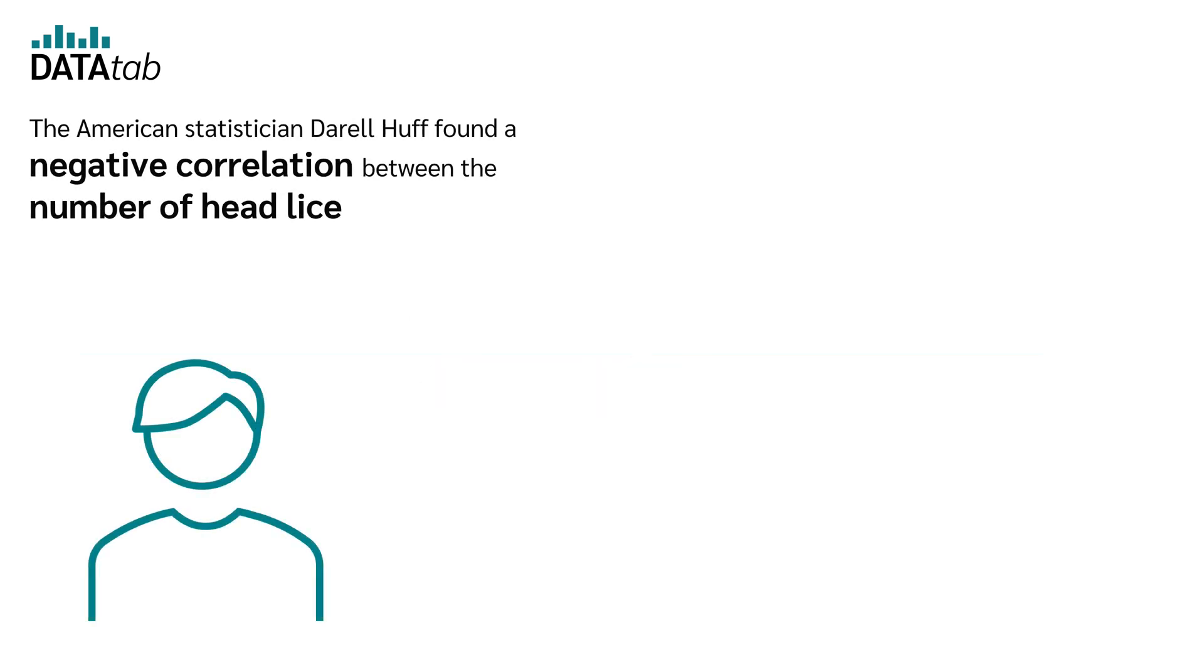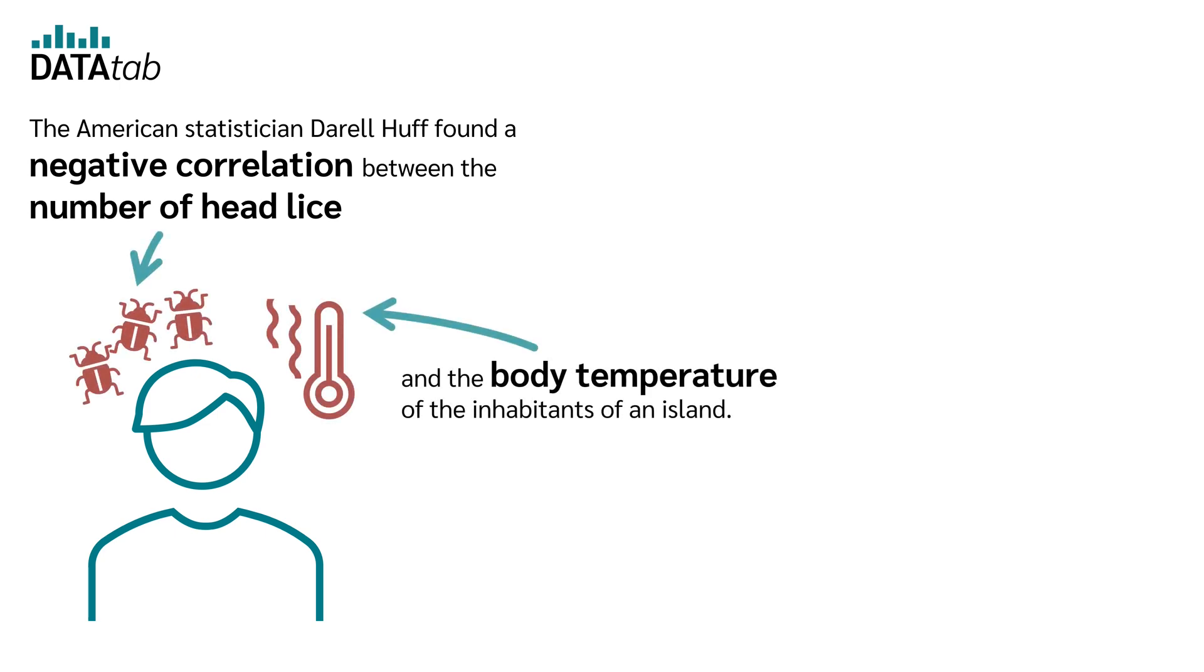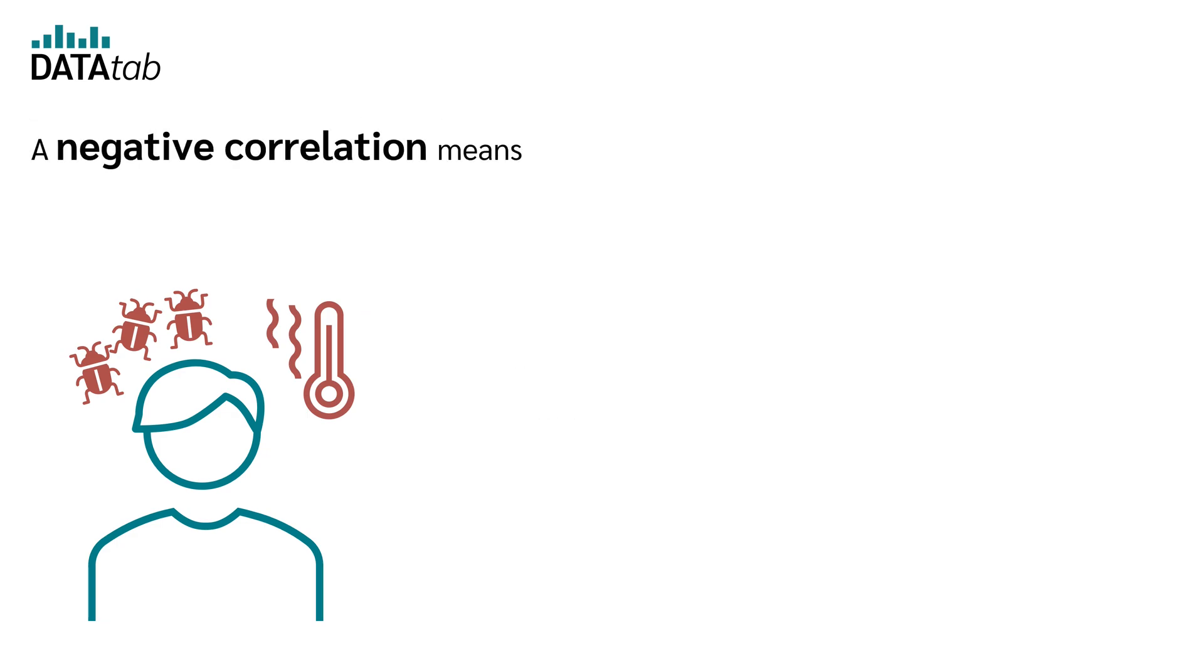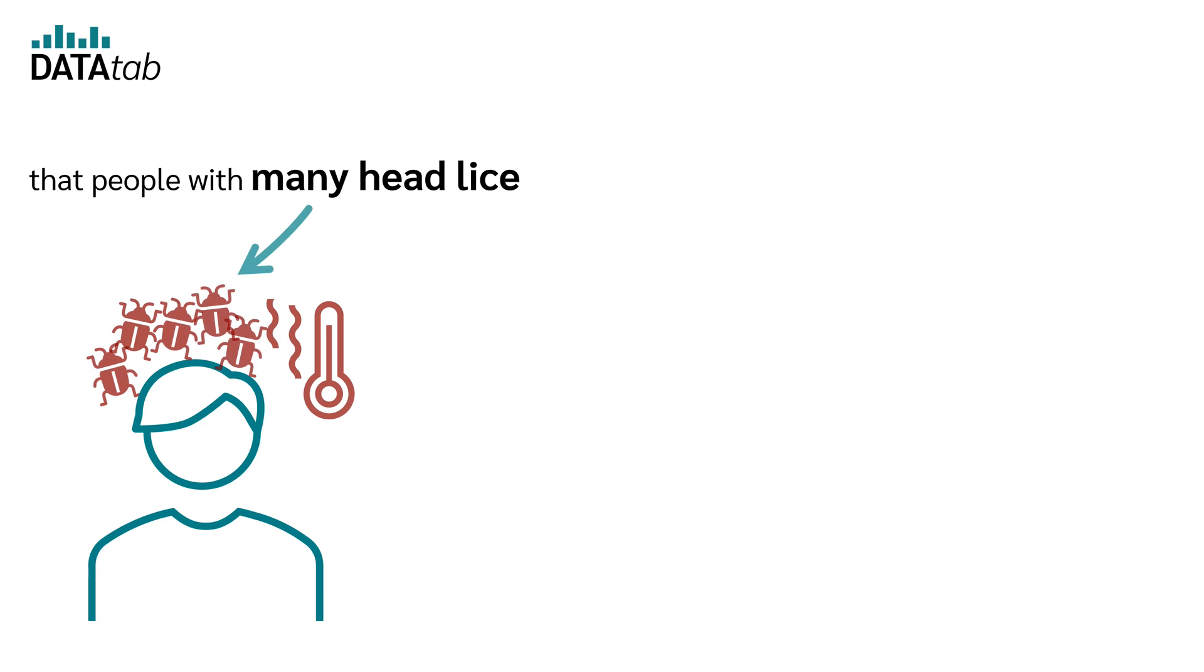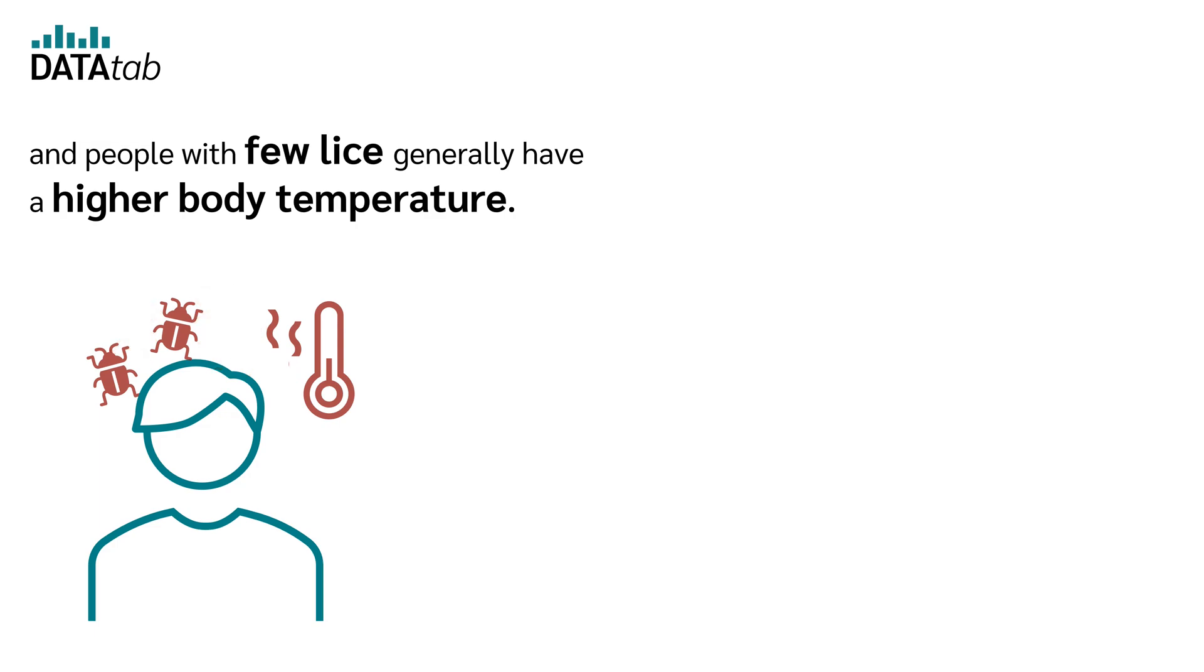Here is an example. The American statistician Daryl Huff found a negative correlation between the number of head lice and the body temperature of the inhabitants of an island. A negative correlation means that people with many head lice generally have a lower body temperature and people with few head lice generally have a higher body temperature.